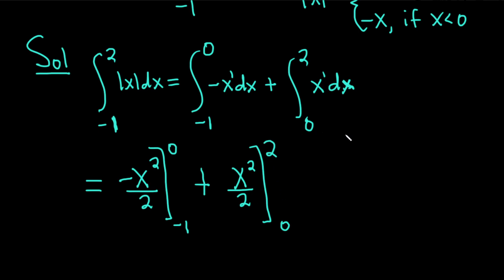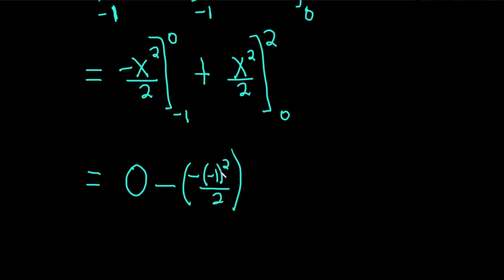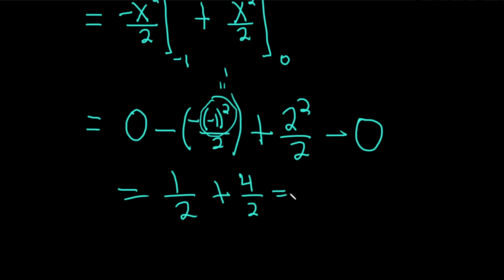Now we carefully plug in the numbers — it's really easy to mess up here. Plugging in the top number 0 makes the first piece 0. Minus plugging in negative 1: we get negative negative 1 squared over 2. The two negatives make a positive, giving 1 half. For the second piece, plugging in 2 gives 2 squared over 2, which is 4 halves, and plugging in 0 gives 0. So the answer is 1 half plus 4 halves, which equals 5 halves.